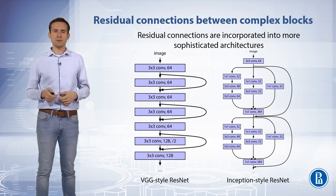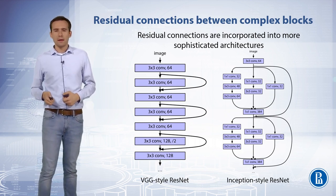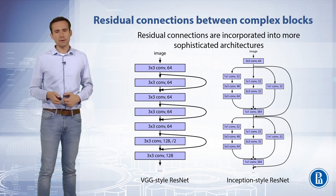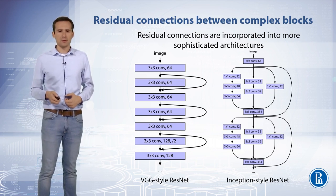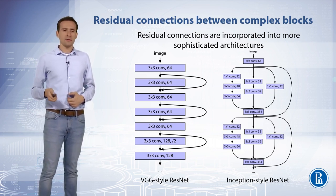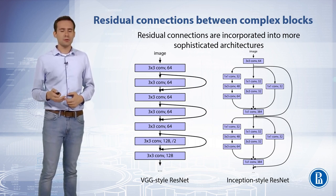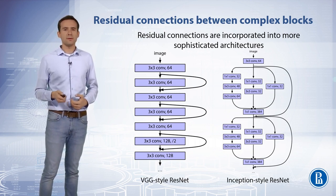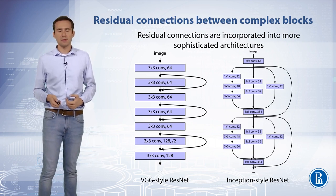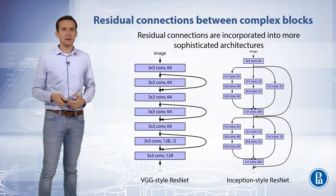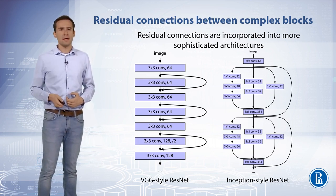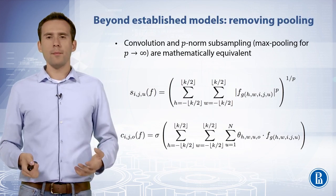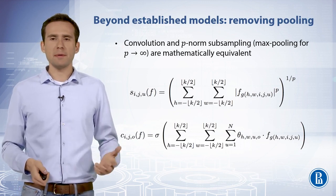Its performance was similar to the latest generation Inception V3 framework. This raises the question of whether there are any benefits in combining the Inception architecture with residual connections. In fact, there are. When residual connections were introduced in conjunction with Inception V4, it yielded a new state-of-the-art in the 2016 large-scale visual recognition challenge. The resulting network is codenamed Inception ResNet V2 and is currently the most advanced convolutional architecture for vision, though more advanced architectures have also been explored.